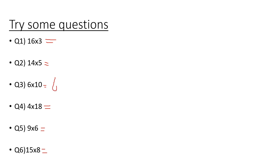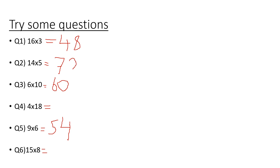Answers: starting with question 3 — 6 times 10 equals 60. Nine sixes equal 54. 16 times 3: 10 times 3 is 30, plus 6 times 3 is 18, giving 48. 14 times 5: a little trick — do 14 times 10 which is 140, then halve it to get 70. Or you can do 10 times 5 plus 4 times 5 and add together.